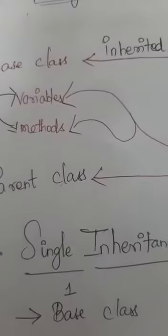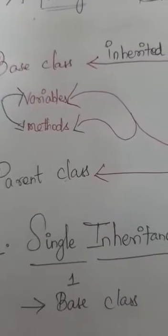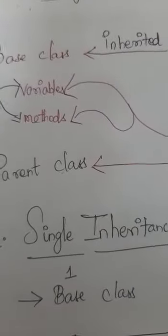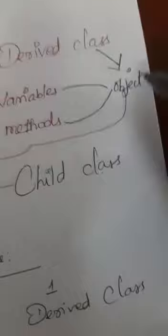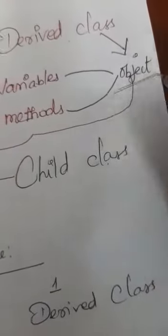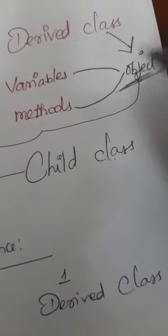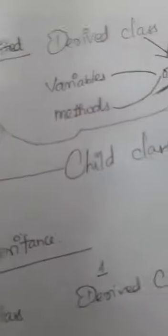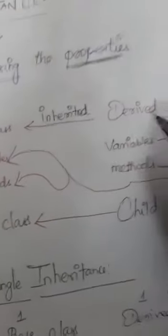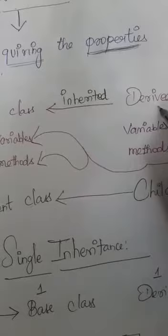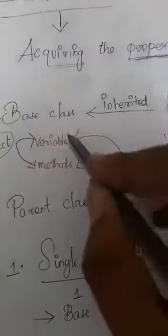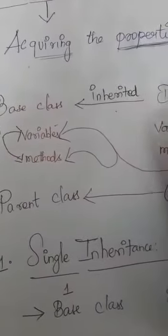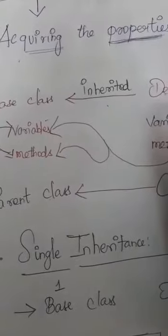Yesterday we saw an example of how to access the members stored inside a class. The members stored inside a class can be accessed with the help of objects. There may be an object for the base class and an object for the derived class. The derived class is acquiring the properties of base class.